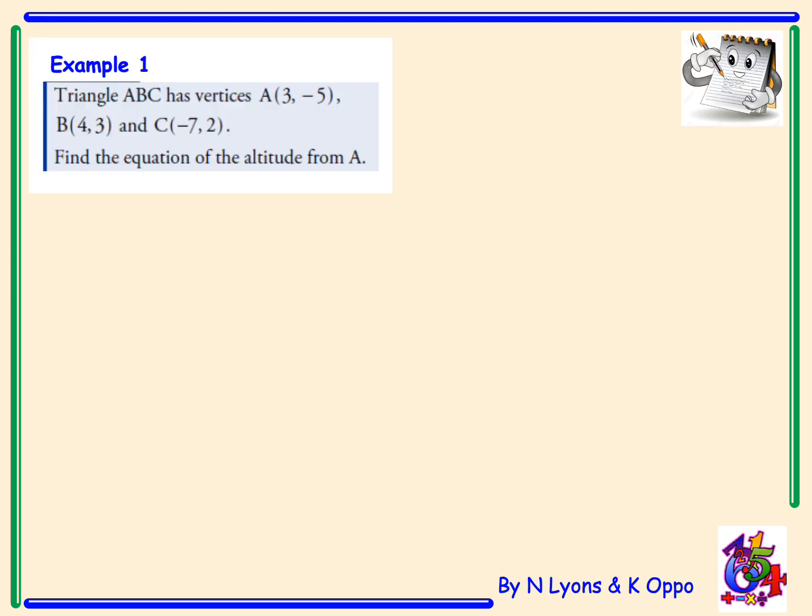Example 1: We have triangle ABC with vertices A(3, -5), B(4, 3), and C(-7, 2). Find the equation of the altitude from A.